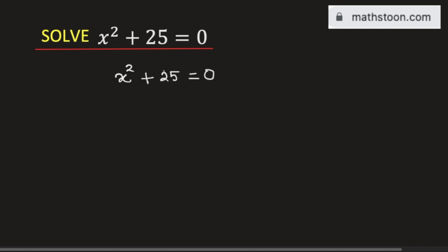To solve this, at first we will take 25 into the right hand side. So the plus sign will be changed. That is, we will get x square is equal to negative 25.